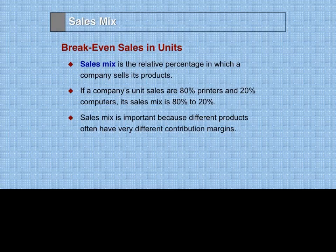You've learned how to calculate the break-even in units and in dollars for a company that sells a single product. But not many companies sell a single product. Most companies have a range of products. So how do we calculate the break-even for a company that sells a range of different products?